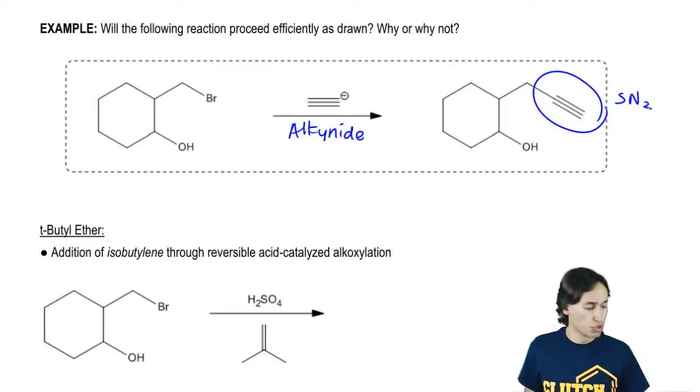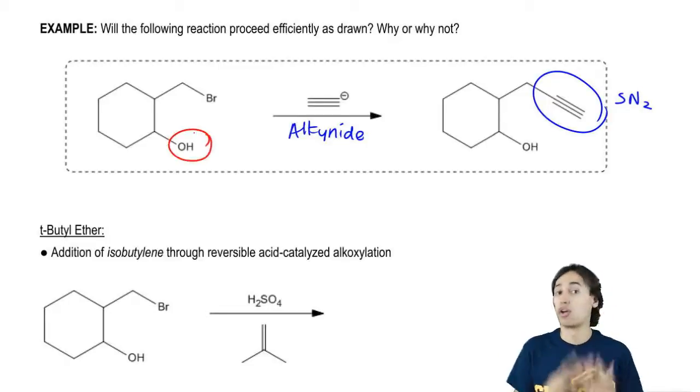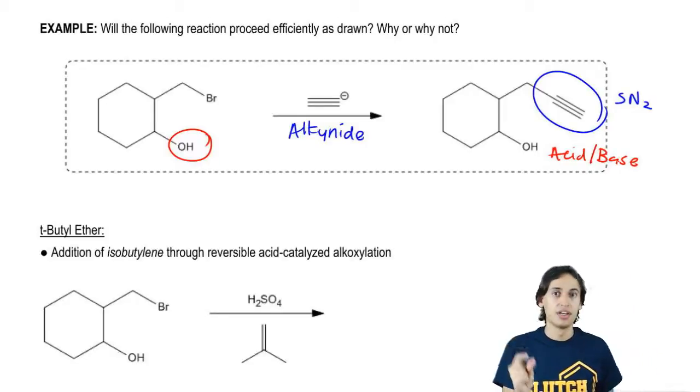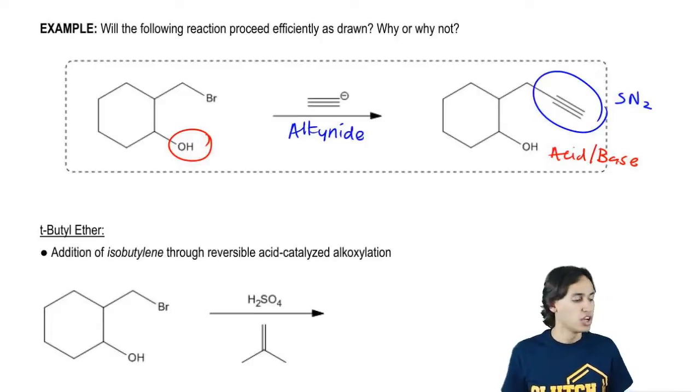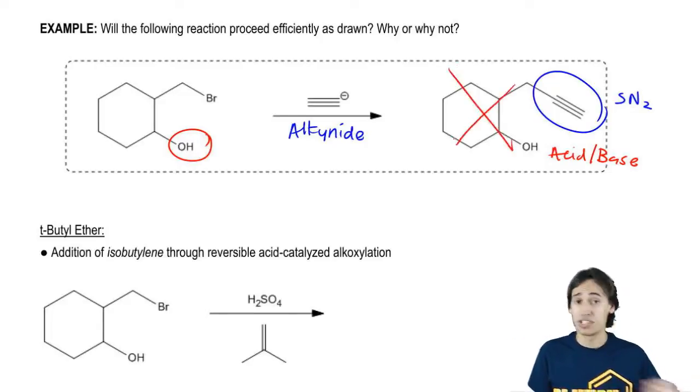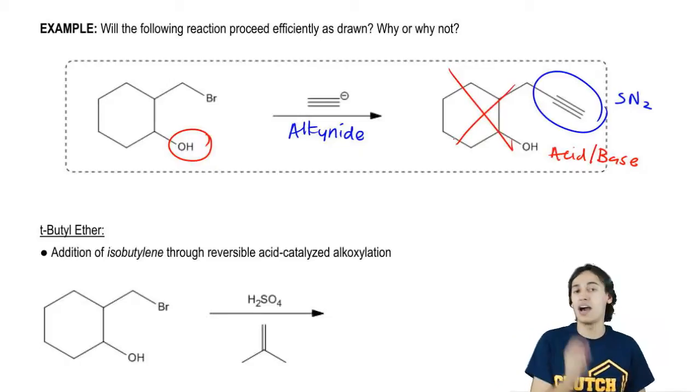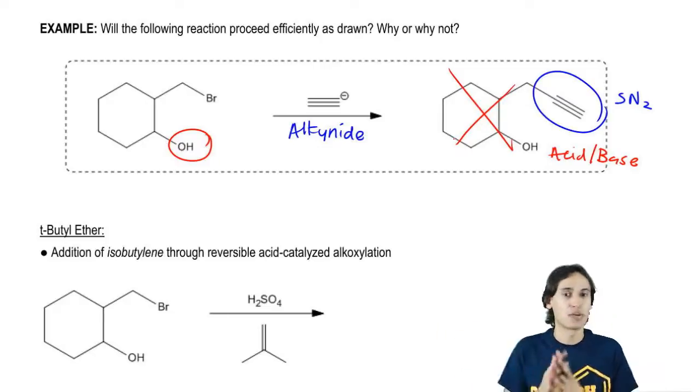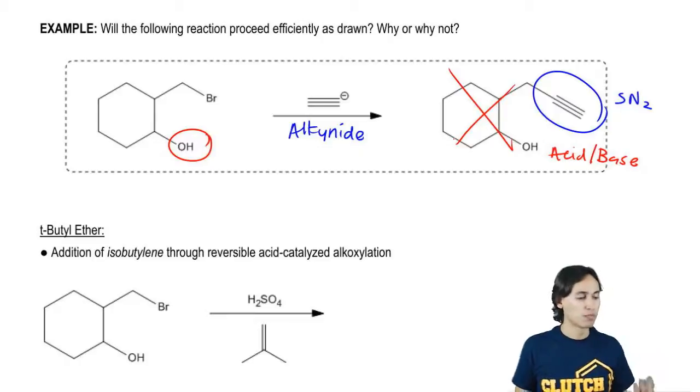But notice that there's that other functional group of the molecule, the alcohol. Can alcohols react with alkyl halides? Actually yes. And they react through a different mechanism. They react through an acid base mechanism. Because we know that alcohols have an acidic proton and alkynides are very strong bases. So it turns out that this reaction will not proceed to completion. In fact, the alkynide will almost exclusively react with the OH and it will pretty much not react at all with the alkyl halide. So if I do want this reaction to happen, is there any way to make it only react with the alkyl halide and not the alcohol?